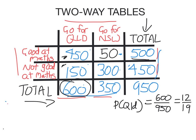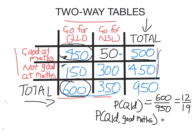This table is very useful for doing 'and' or 'or' questions. Let's say I want to find the probability that somebody from this sample goes for Queensland and is good at maths. Looking at the table, how many go for Queensland and are good at maths is this number here: 450. So 450 go for Queensland and are good at maths out of the 950 in total, and that gives us 9 over 19. So the probability that a randomly selected student goes for Queensland and is good at maths is 9 over 19.